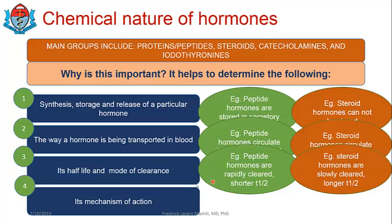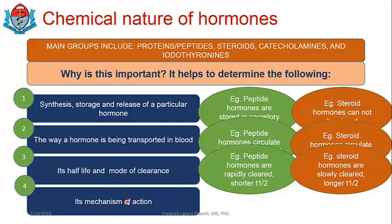For example, peptide hormones such as insulin require membrane receptors. On the other hand, steroid hormones have cytoplasmic or nuclear receptors.